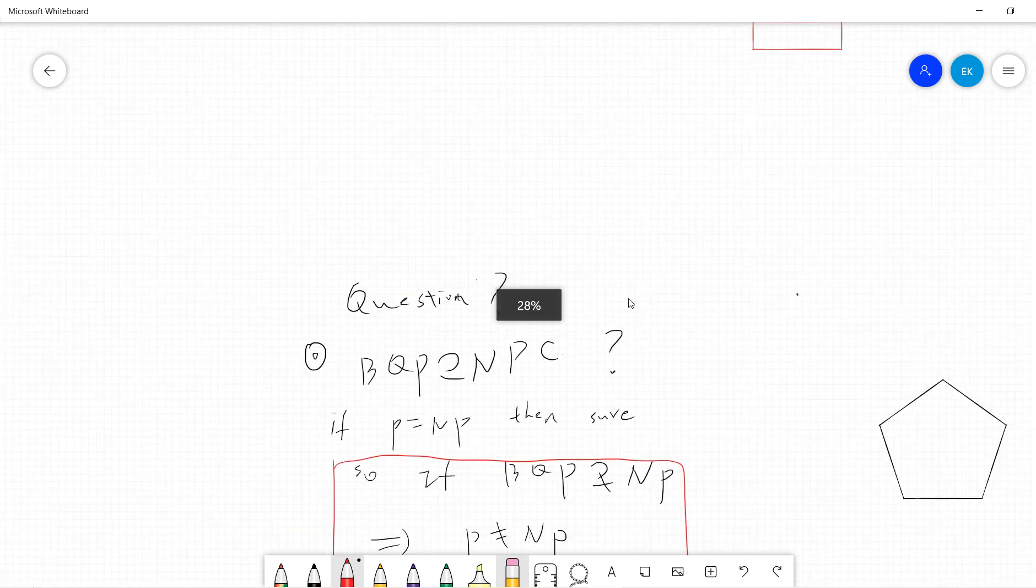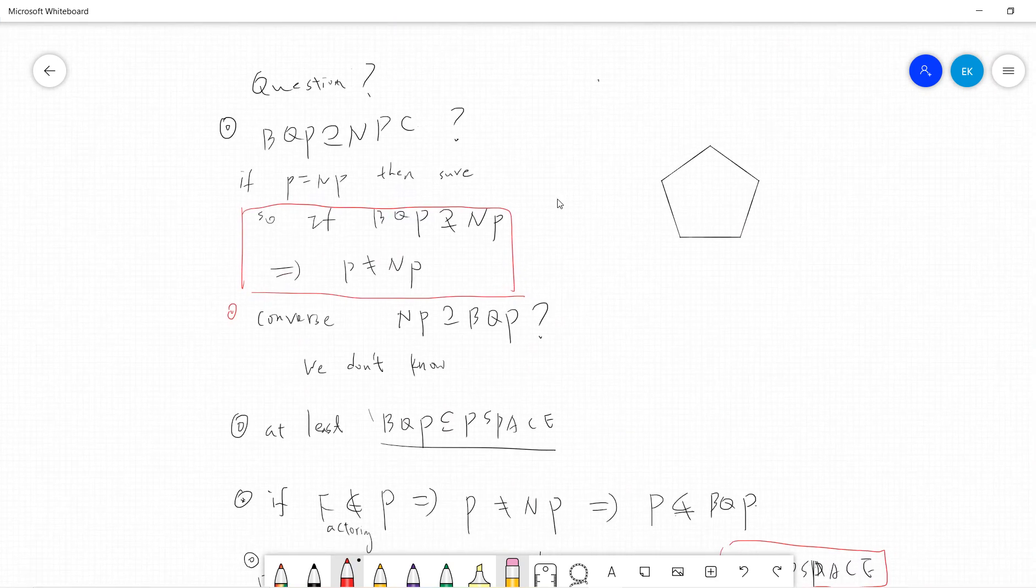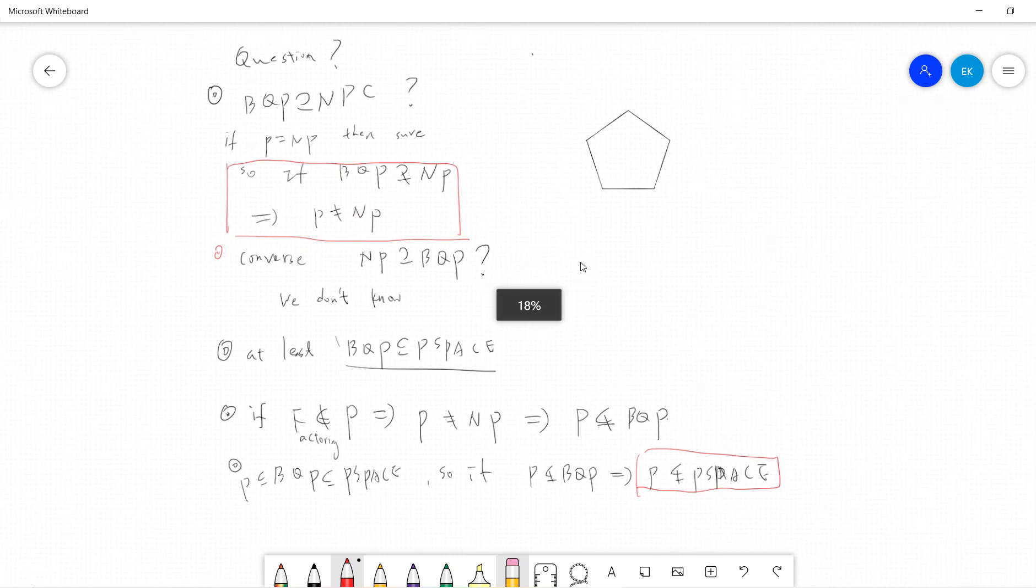Let's talk some further implications. Question is: does BQP cover NP-complete? The reason is that we don't know. But if P equals NP, then sure, then this is correct.